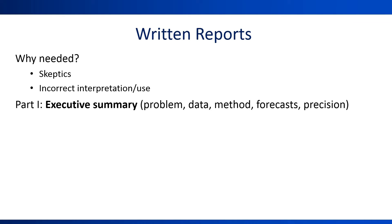A professional report will typically open with a one-page executive summary. This summarizes the forecasting problem, the data used, the forecasting methods, and performance evaluation approaches, as well as presenting the forecasts and the prediction intervals, typically using a chart. The wording should be as clear and non-technical as possible.